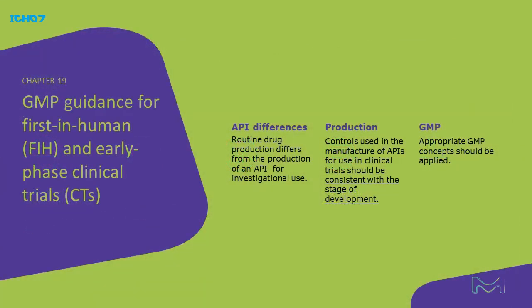A routine drug production differs from the production of an API for investigational use. Chapter 19 of the EU GMP Guide defines that controls used in the manufacture of APIs for use in clinical trials should be consistent with the stage of development, and appropriate GMP concepts should be applied. This approach reflects that requirements may change with the development of the manufacturing process.